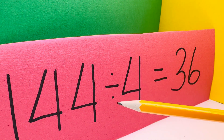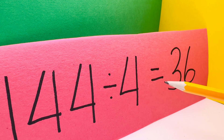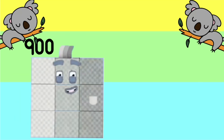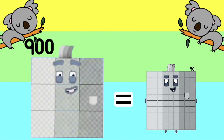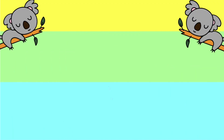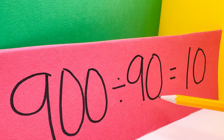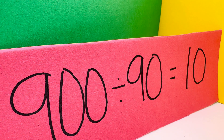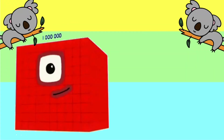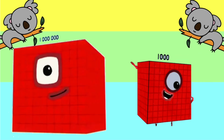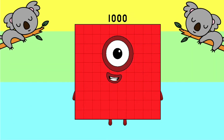144 divided by 4 is equals to 36. 900 divided by 90 is equals to 10. Lastly, 1,000,000 divided by 1,000 is equals to 1,000.